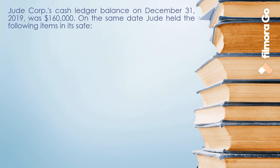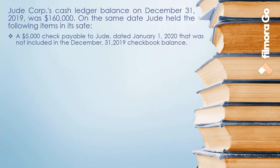Let's solve a problem. Jude Corporation's cash ledger balance on December 31, 2019 was $160,000. Jude held a $5,000 check payable to Jude dated January 1, 2020, which was not included in the December 31, 2019 checkbook balance. Since the balance sheet date is December 31, 2019, the check received is a post-dated check. As we learned, post-dated checks are not considered cash, so Jude is correct not to record this in its books on December 31, 2019.